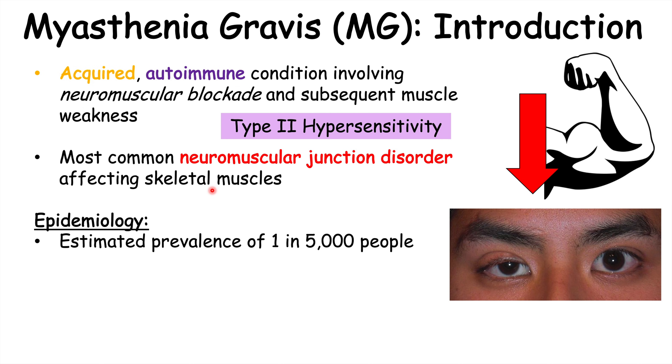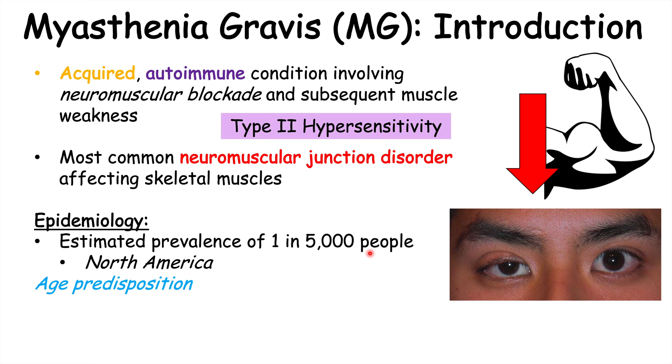It is estimated to have a prevalence of 1 in 5,000 people, and this data comes from North America. There are different age predispositions for this condition.